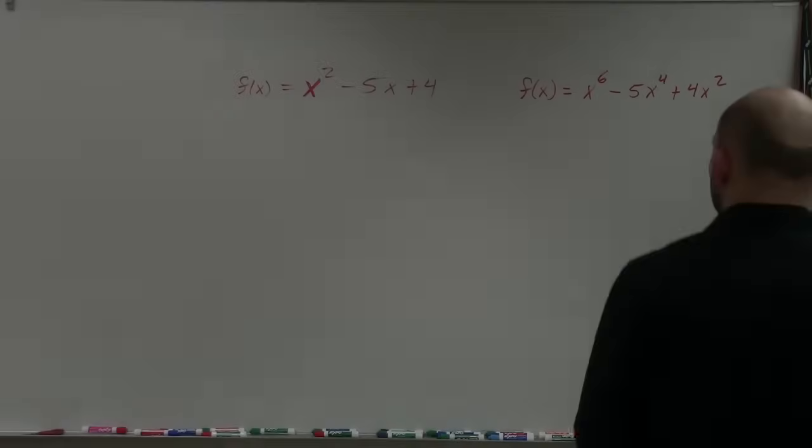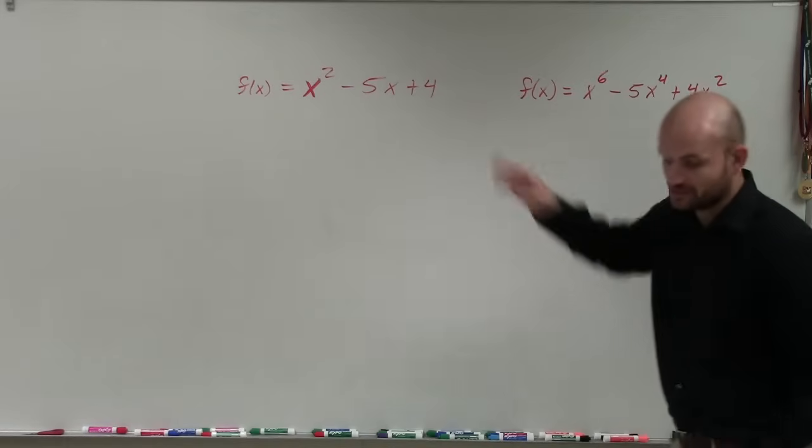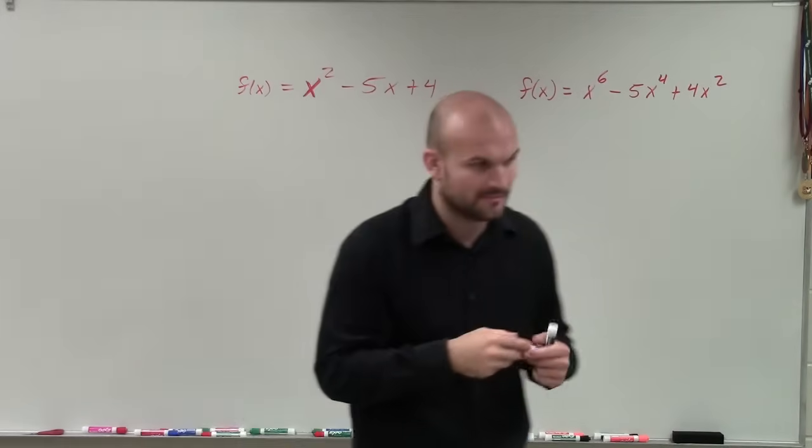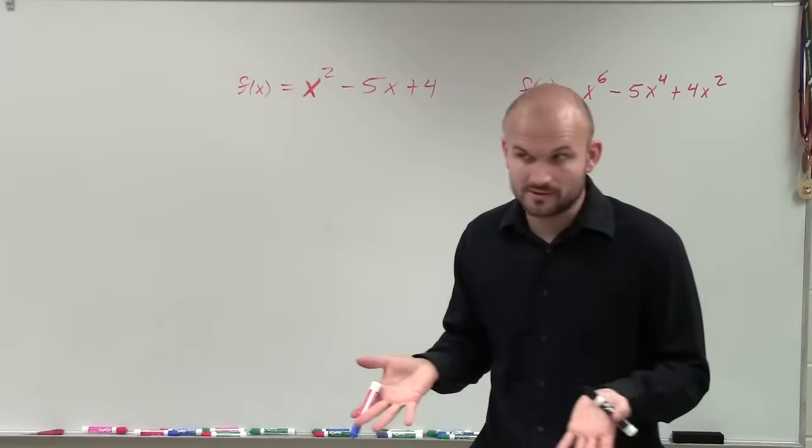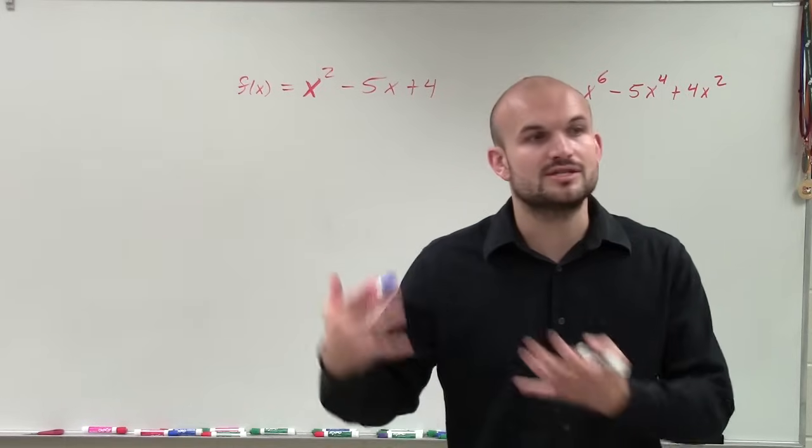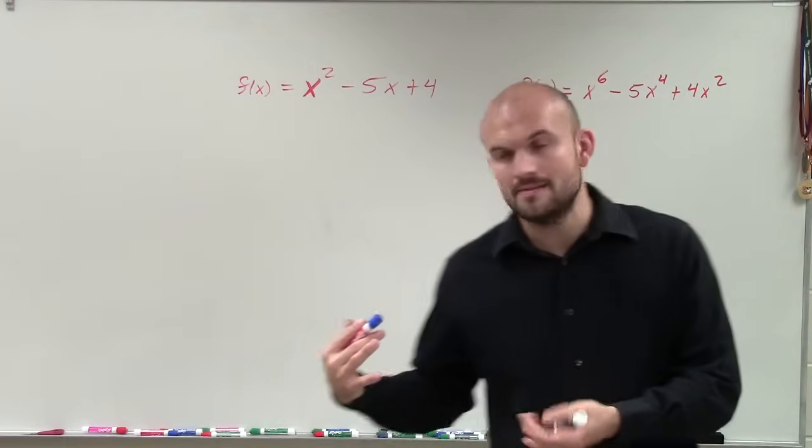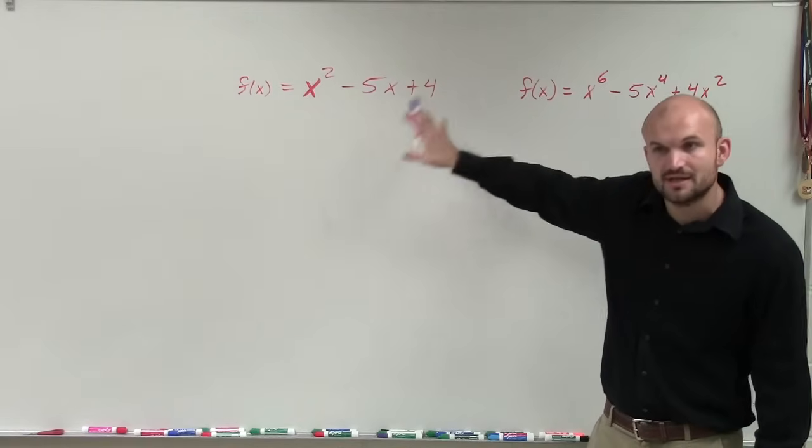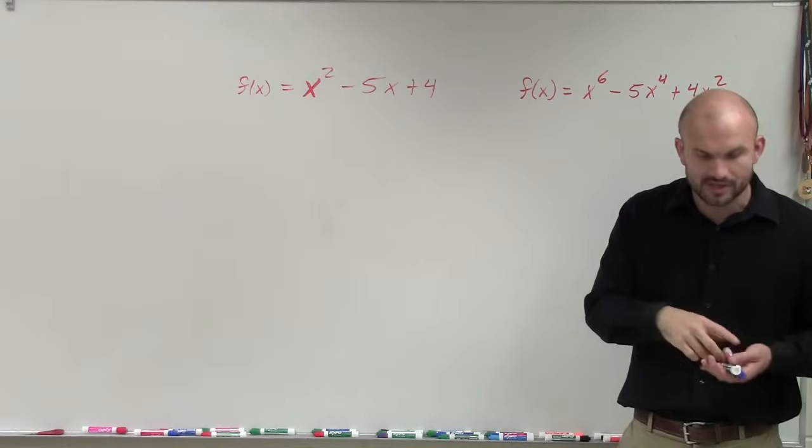First of all, one of the big mistakes that I've seen - we have two functions. And at these two functions, I say find the zeros and determine the multiplicity. First of all, find the zeros is just a way that we're talking about functions to really solve the equation.